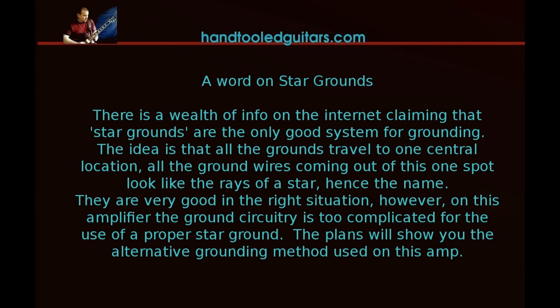Just a word on star grounds. There's a lot of information on the internet claiming that star grounds are the only good system for grounding. The idea is that all the grounds travel to one central point, and then the wires coming out of this going to the other parts of the chassis look like rays of a star, and that's why they call it a star ground. It's good in the right situation. On this particular amp, the ground circuitry is a little more complicated and I'm not going to be using a star ground technically. It'll be kind of one but not in the traditional sense that you might have seen before. The plans that are available on the website will show you how we ground this particular amp.